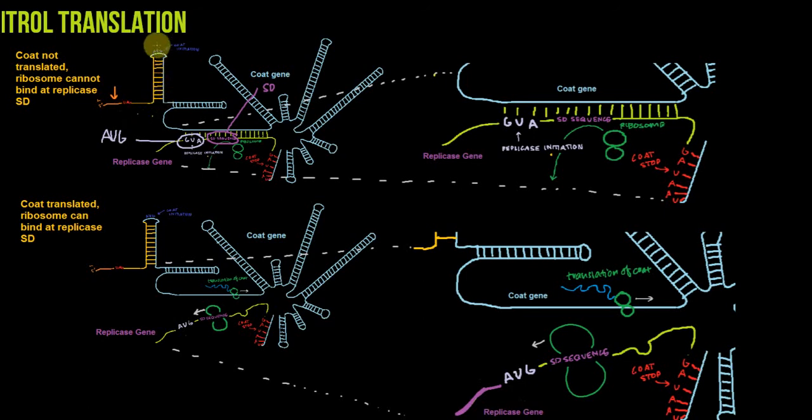Now here we've got the initiation codon for the coat protein. And the coat protein gene is all of this here in light blue. And it stops all the way over here where we've got two stop codons in tandem, which actually isn't that uncommon, even if you perhaps haven't seen that before.